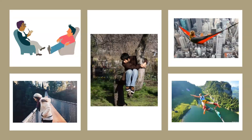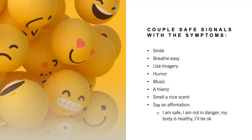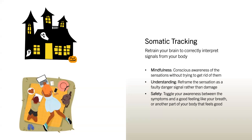This is about learning to listen to your body. The exercise involves turning on the symptom mildly and then coupling it with safe signals: smile, breathe out, use imagery, humor, music, a nice scent, say an affirming statement like 'I'm safe, I'm not in danger, my body is healthy, and I'll be okay.' Experience the symptoms with a sense of ease and relaxation. One way to do this is through somatic tracking — a conscious awareness of the sensations in your body without trying to get rid of them, merely noticing them and paying attention to the details while experiencing safe signals at the same time.